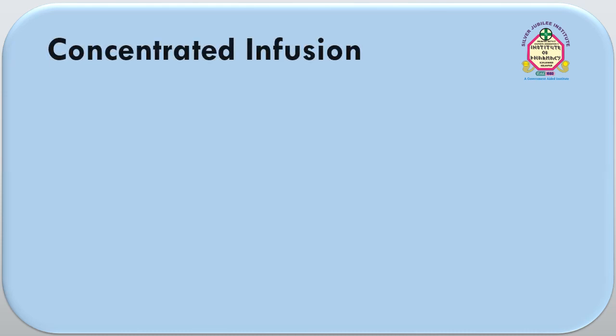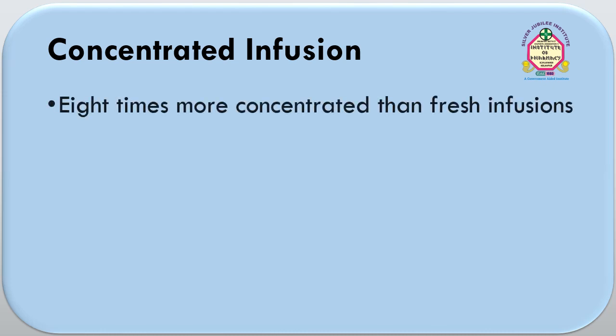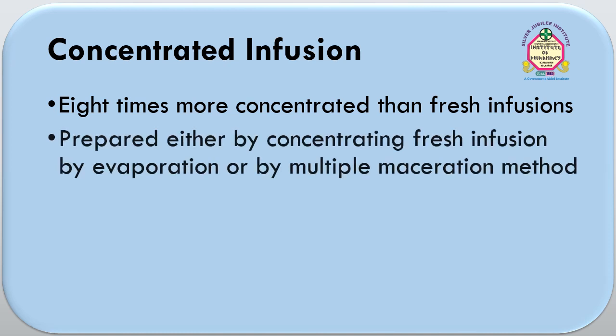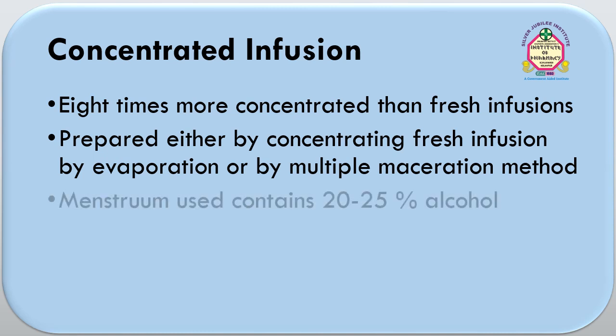An example of fresh infusion is fresh infusion of quassia. Concentrated infusion is 8 times more concentrated than fresh infusion. It is prepared either by concentrating fresh infusion by the process of evaporation or by multiple maceration method.